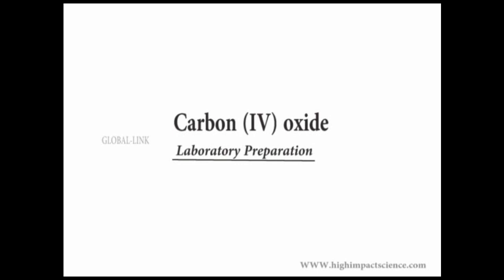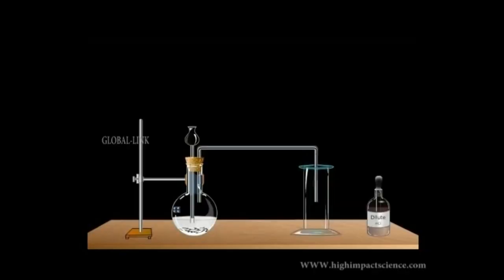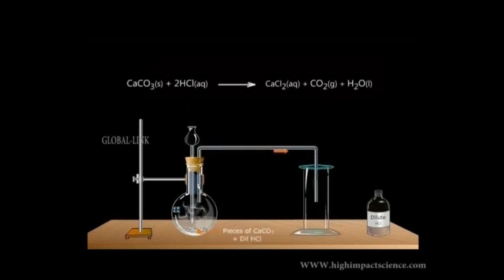In the laboratory, carbon-4 oxide is synthesized by reacting calcium carbonate with dilute hydrochloric acid. A few pieces of calcium carbonate are taken into a round-bottomed flask. Dilute hydrochloric acid is added, and carbon-4 oxide is evolved steadily. The gas is collected in the jar by upward displacement of air because it is denser than the air itself.